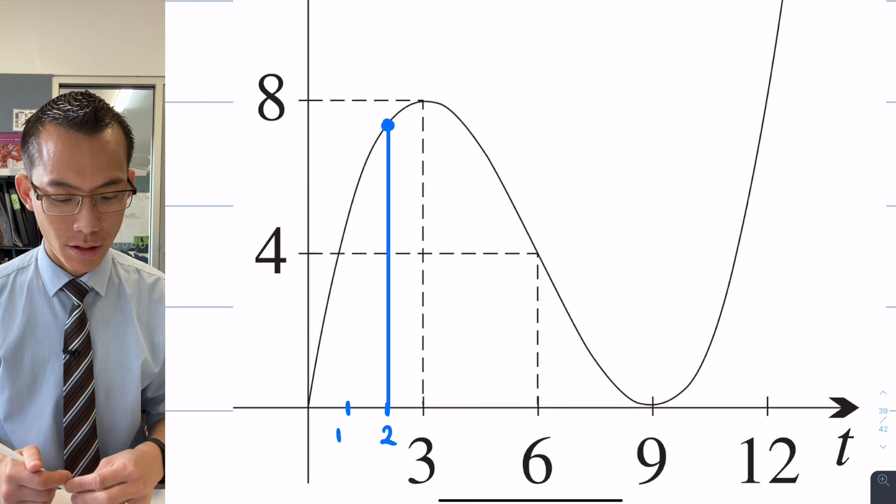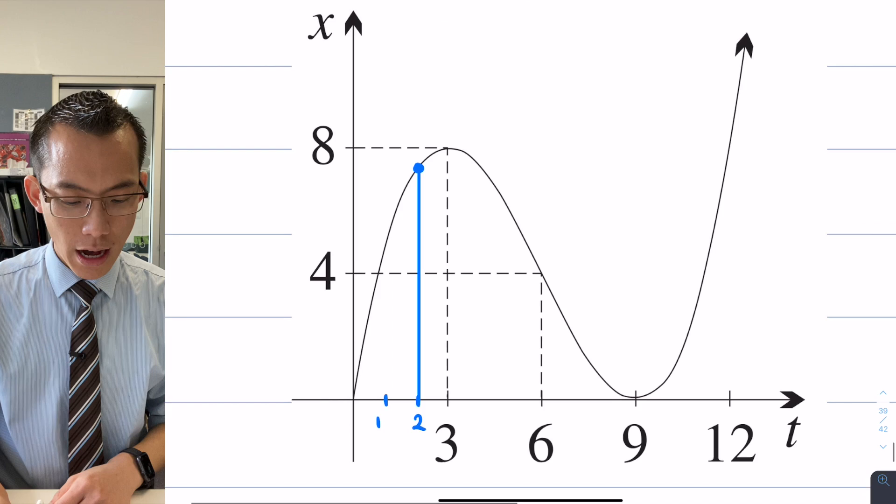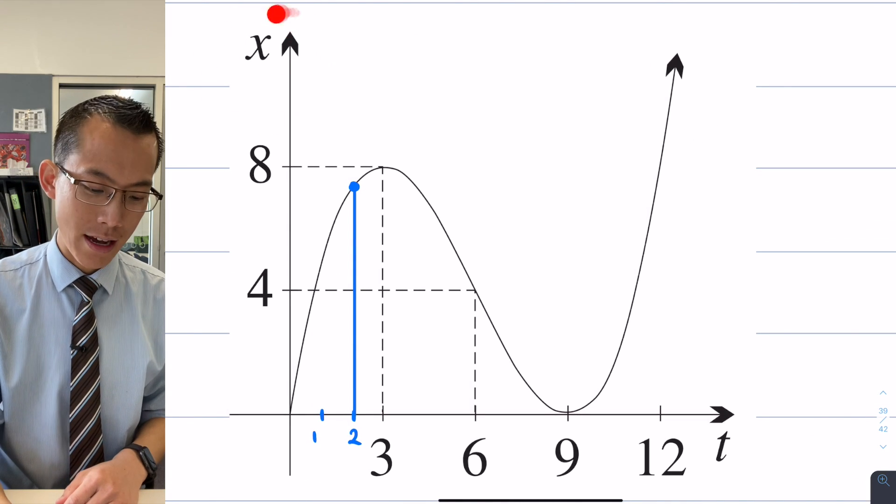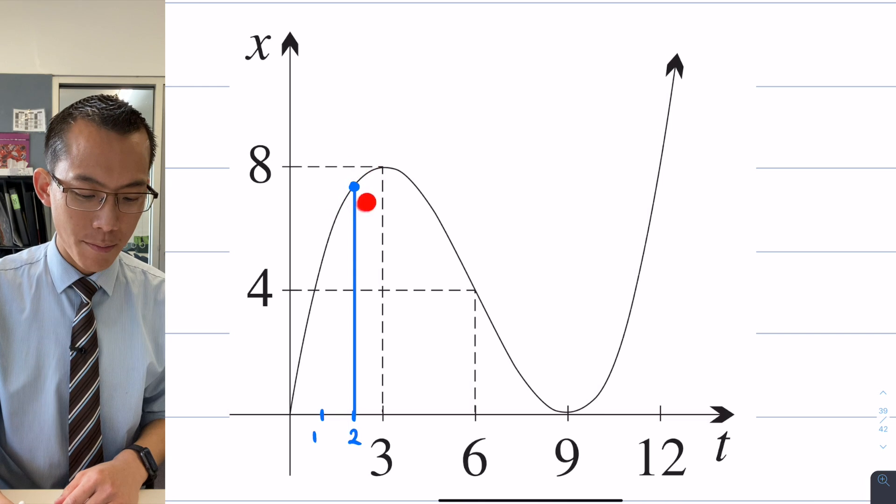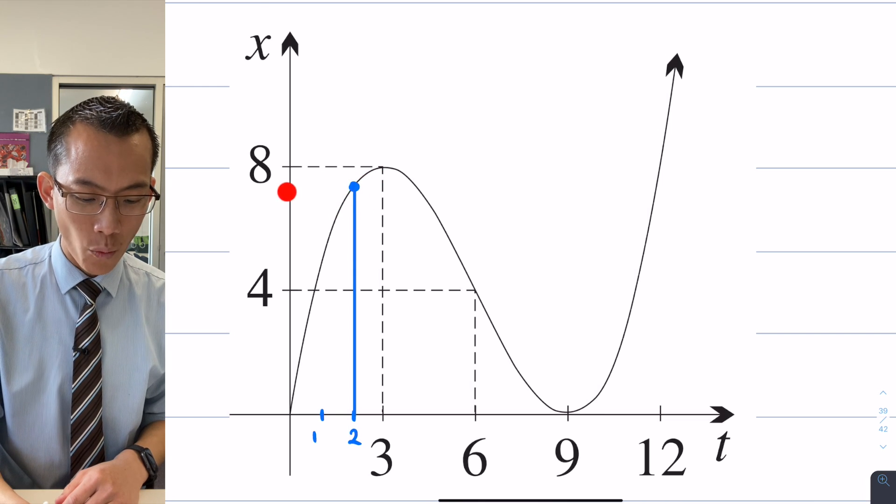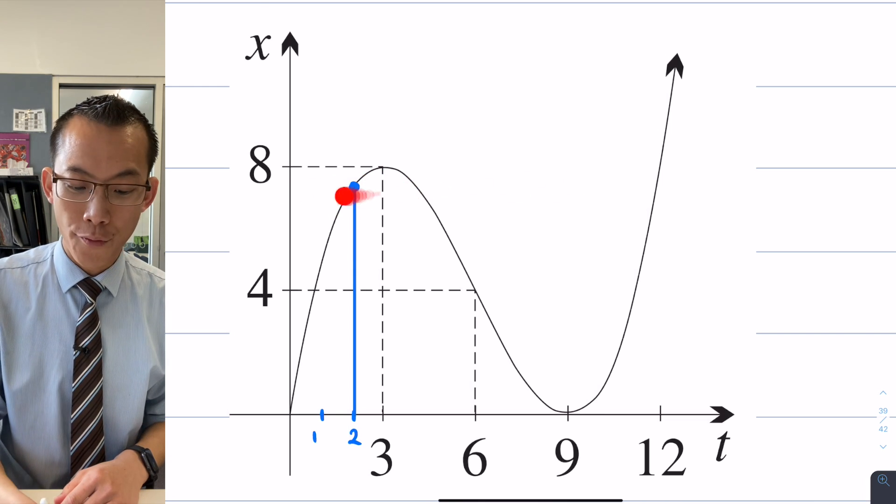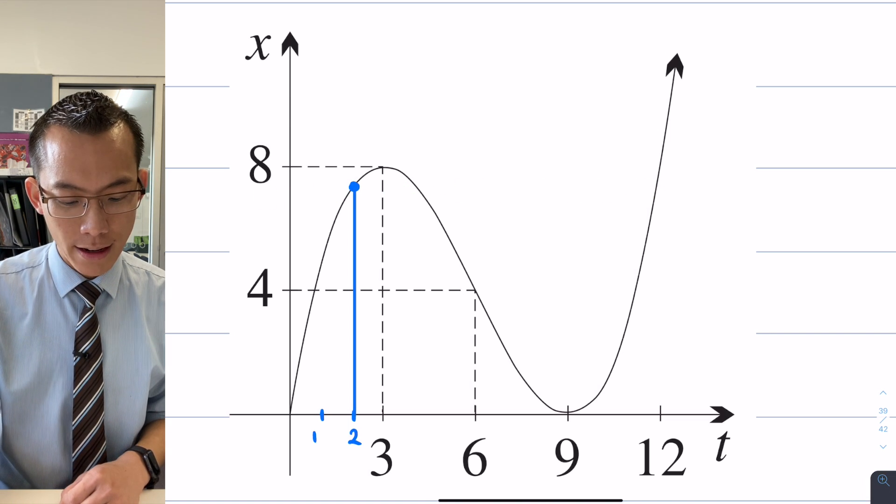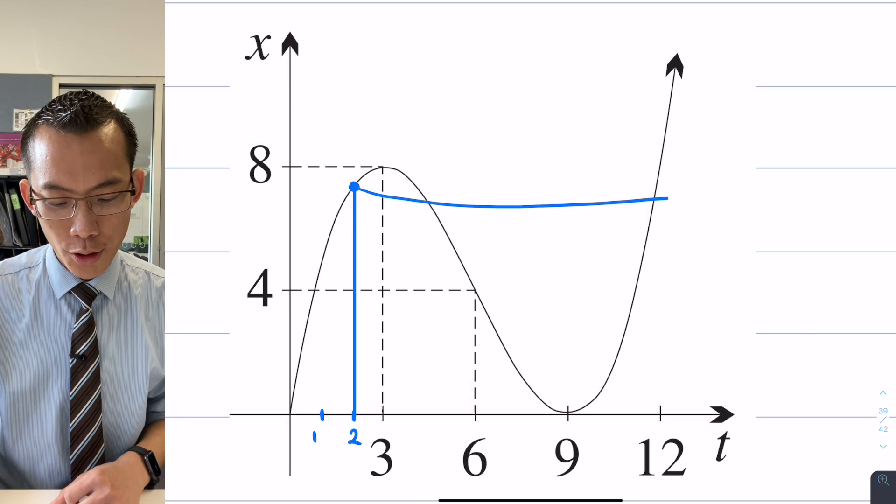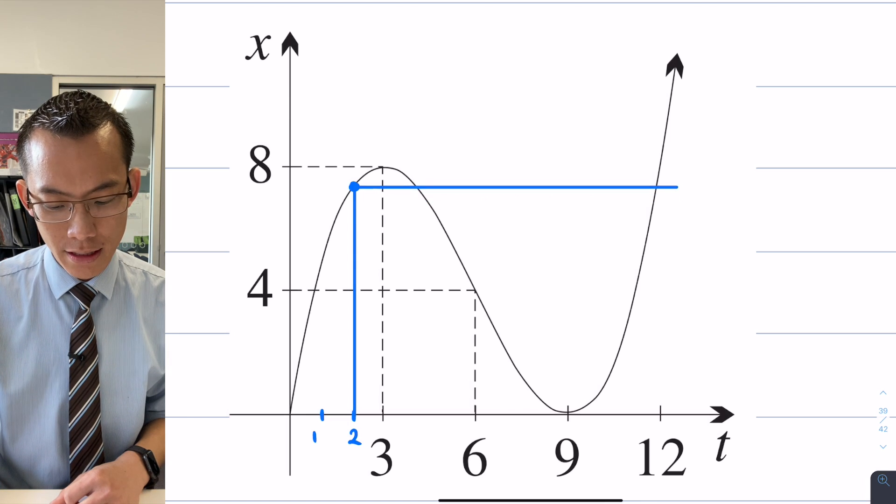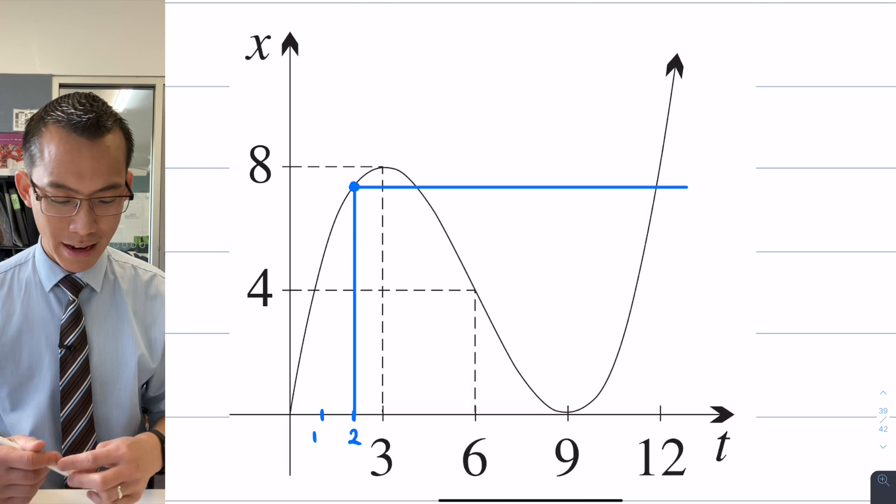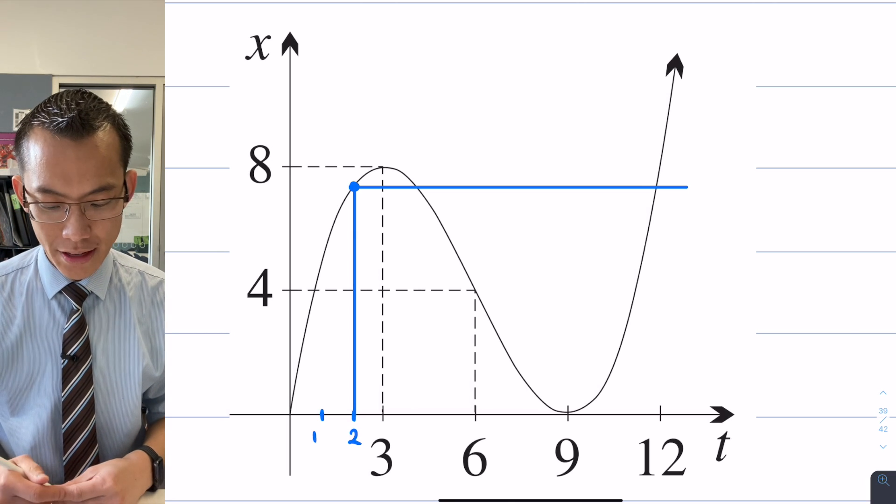You use a ruler and you go up to there and you can see, oh this is where I am, and I need to find where I'm at the same position and also where I'm at the same velocity. Let's do them one at a time. So position, displacement, is what this graph tells you about. It's a displacement graph. So to know when I'm at the same displacement, I just need to know when am I at the same place vertically speaking.